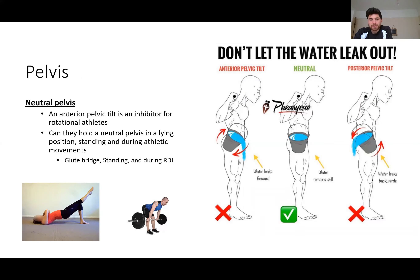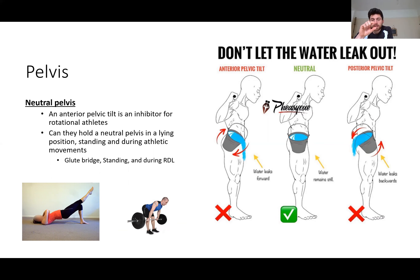Having a neutral pelvis is vital for rotational sports, and an anterior pelvic tilt is an inhibitor for rotational athletes. We first want to test if they can hold a neutral pelvis in lying, standing, and then during athletic movements. On the left we've got movements like a glute bridge — the lumbar spine goes into extension and we want that to be as flat as possible. The cue we use is: can we keep the water in the bucket? If possible, we might even go into a slight posterior pelvic tilt — just a touch of water out the back.